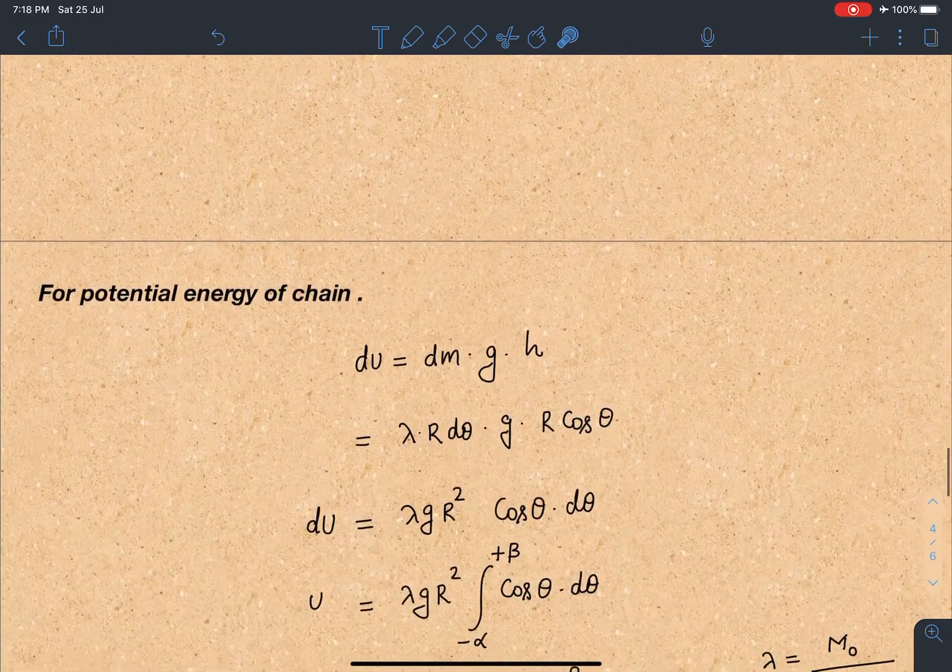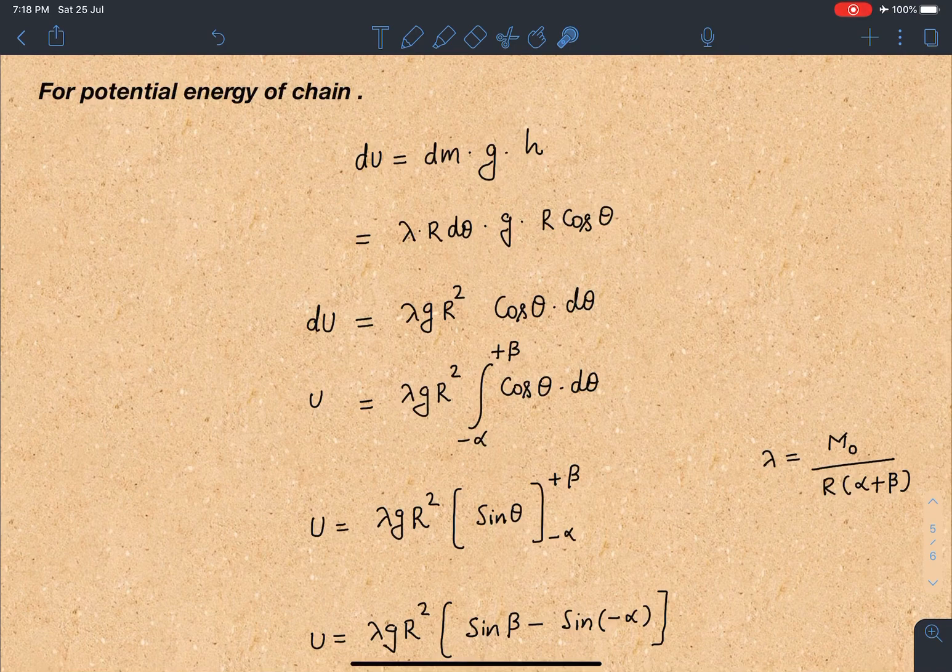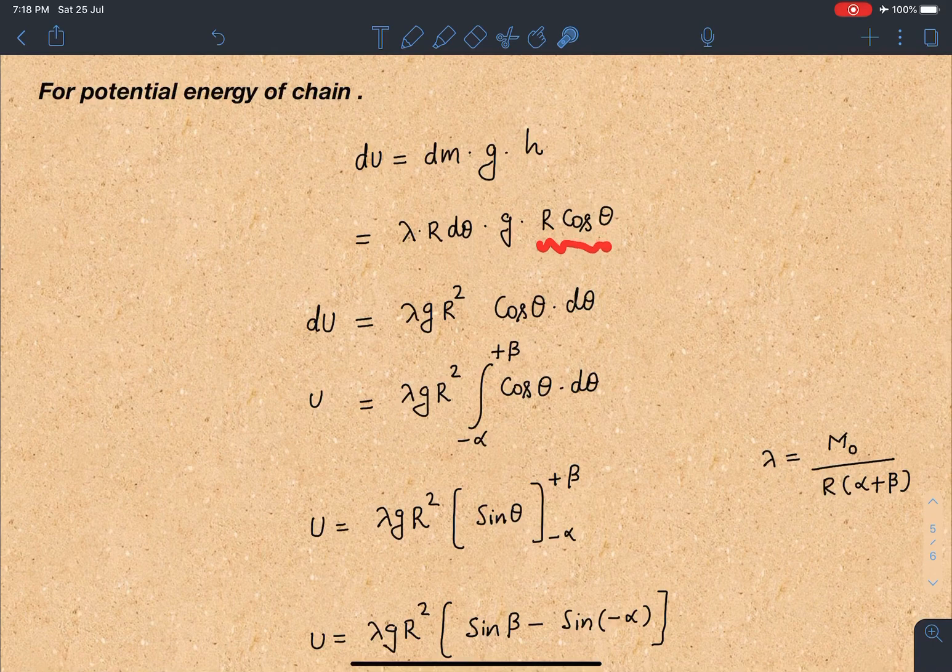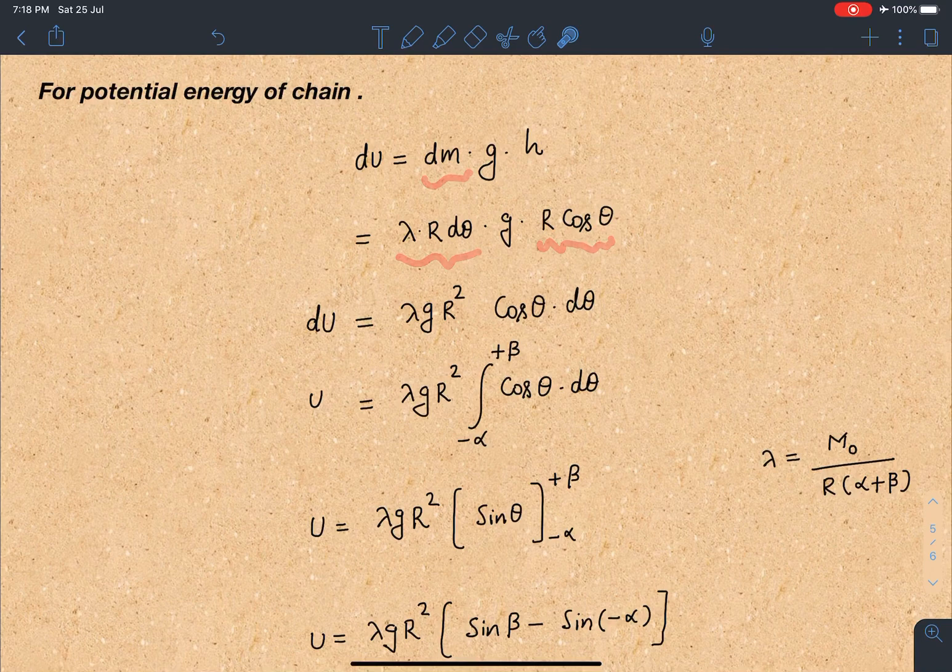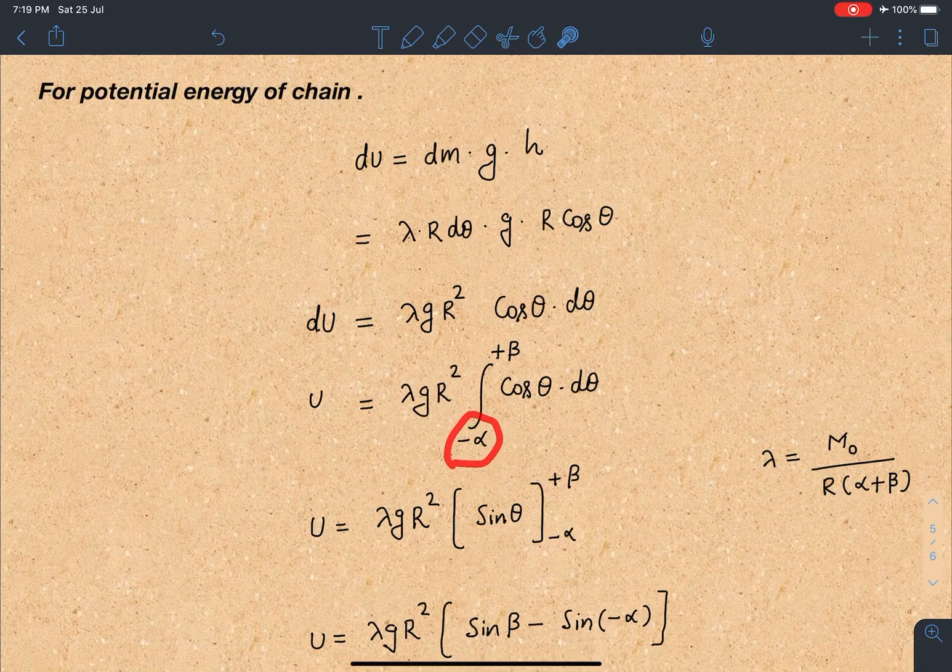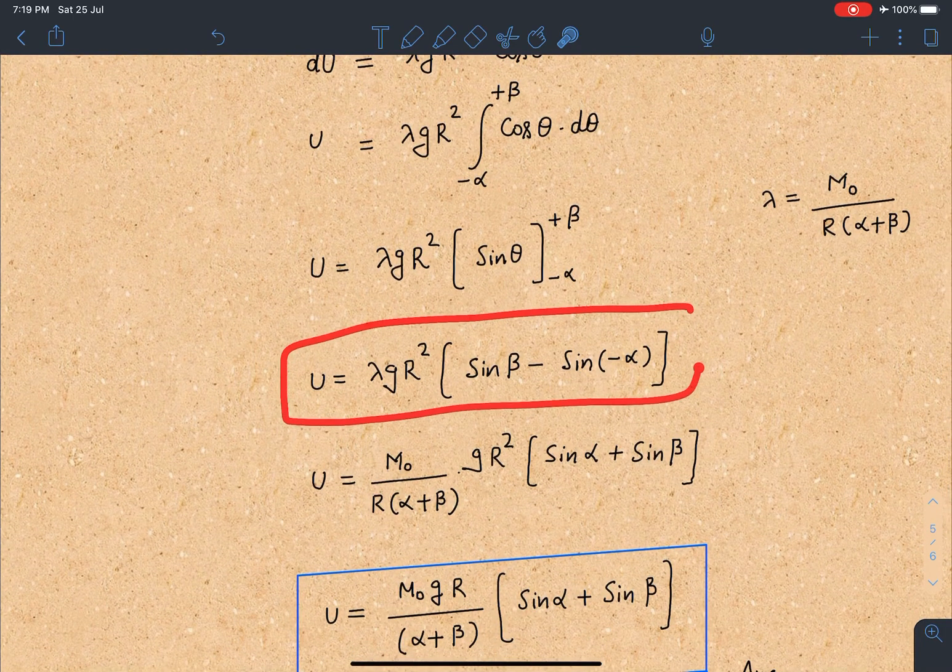Let's move to the next part for the potential energy of the chain. So here I am writing this gravitational potential energy as dmgh where h is the height from the reference point for that differential element. That height is given as r cos theta. The dm value is lambda r d theta. So when I rearrange these terms I will be getting lambda r g r square cos theta d theta. For the entire chain if I have to calculate this potential energy I am going to substitute the limit again from minus alpha to plus beta.